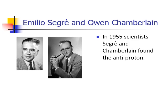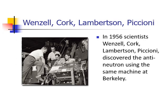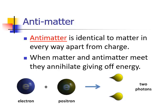Scientists working under Enrico Fermi discovered the anti-proton, and another team working in America discovered the anti-neutron. So what is antimatter? Antimatter is the same as matter in every way apart from charge — there are also other properties such as spin, but we don't deal with that in this course. When matter and antimatter meet, they annihilate and give off energy, releasing photons — often as gamma radiation — in a burst of energy.